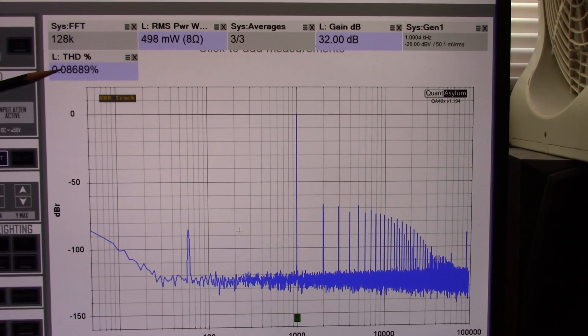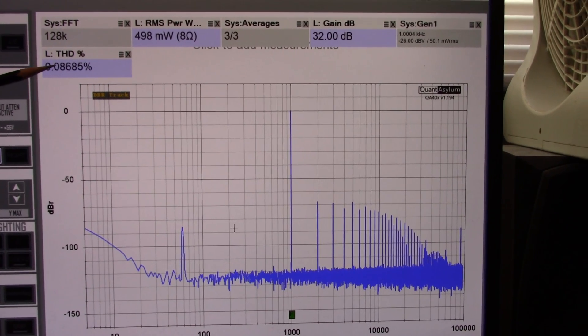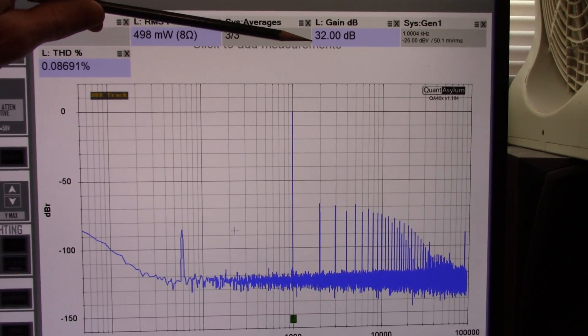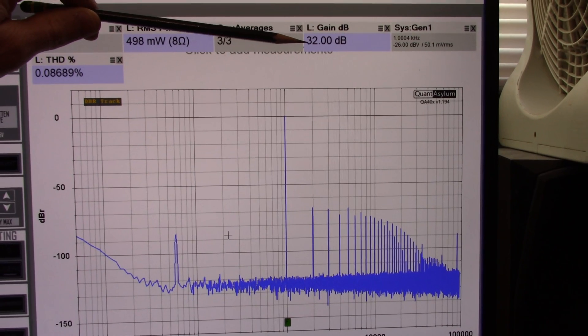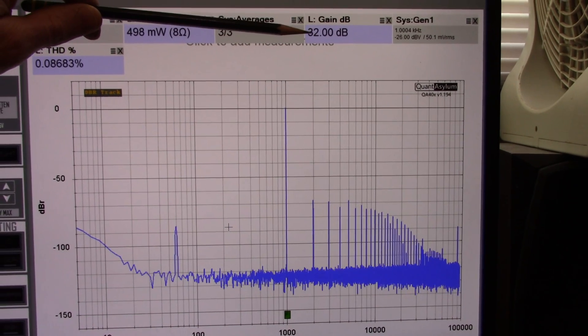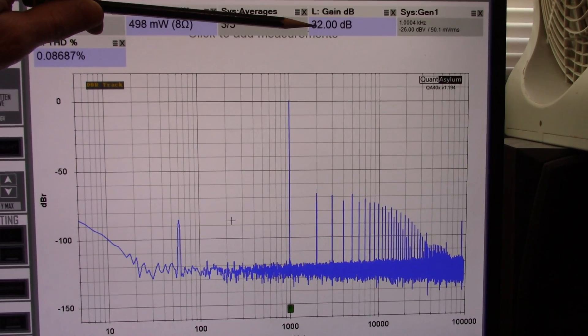I like to see distortion less than 0.1%, and we're certainly doing that here, just barely. We're 0.08%, so it's looking pretty good there. The amplifier has a gain of 32 decibels. It is a fixed gain amplifier, no external feedback to adjust that.